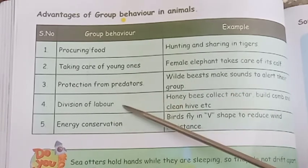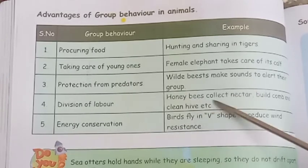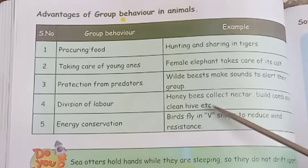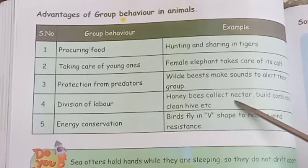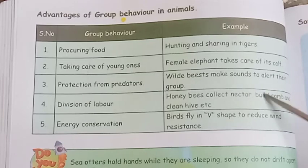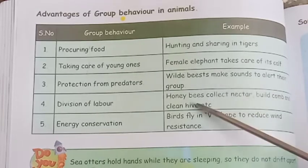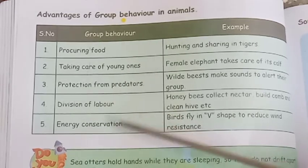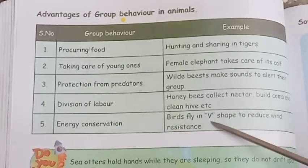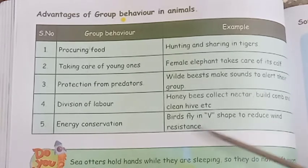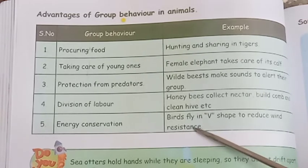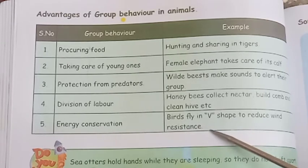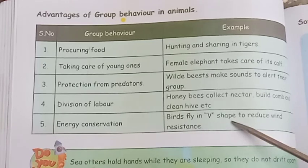Division of labor: Honeybees collect nectar, build comb, and clean the hive. Energy conservation: Birds fly in a V-shape formation to reduce wind resistance, saving energy during flight.